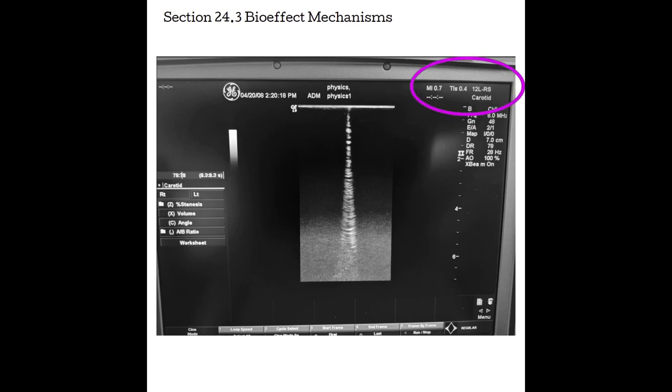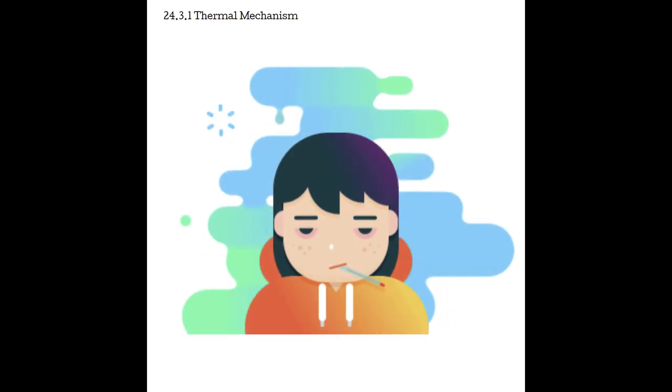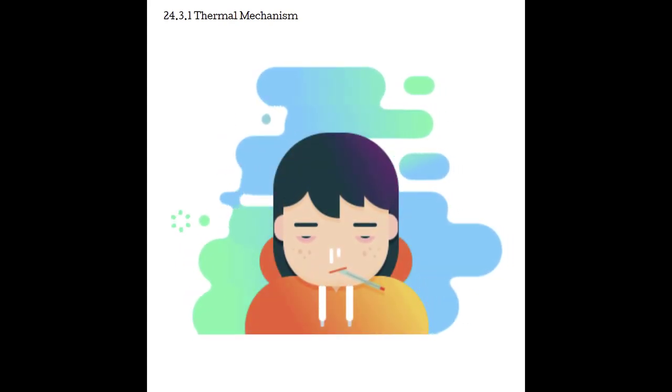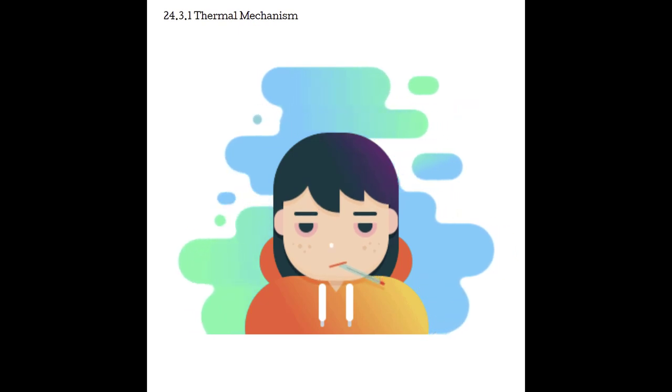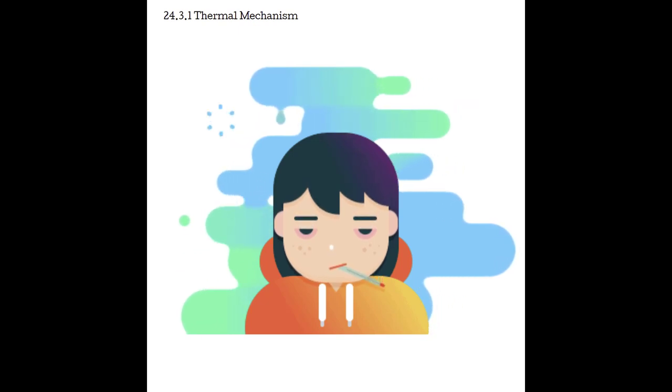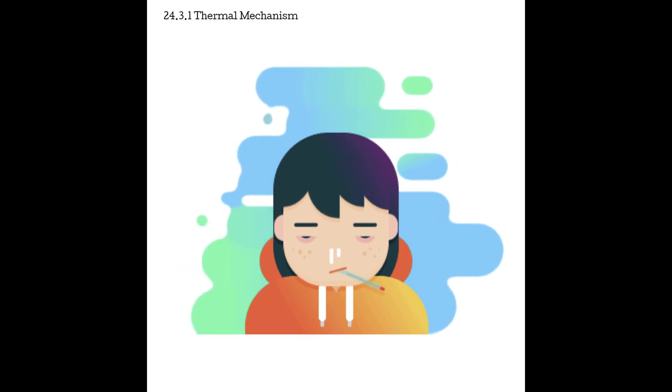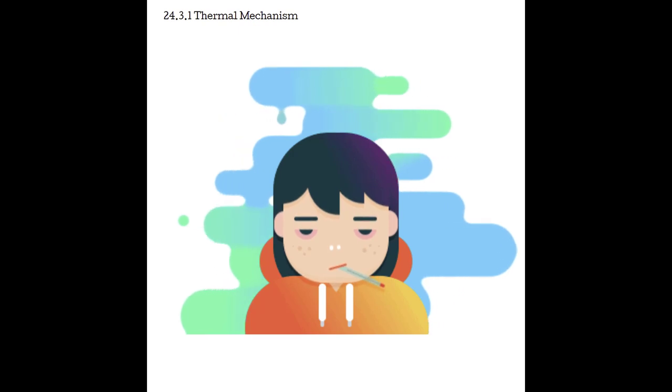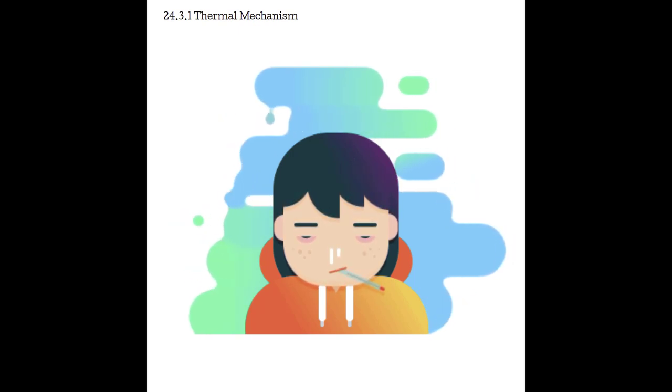Thermal bio effects result from the temperature in the tissues rising. Humans operate efficiently around 37 degrees Celsius or 98.6 degrees Fahrenheit. If the temperature exceeds this level, certain cellular functions become impaired. We know this from our body's instinct to run a fever to combat bacterial and viral infections. Remember that the body will attenuate the sound through absorption, scattering, and reflection. Since absorption is the biggest factor of attenuation and that energy is converted into heat, thermal bio effects are a real concern.